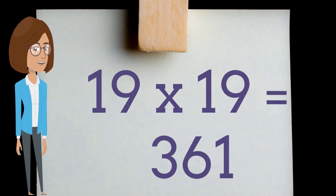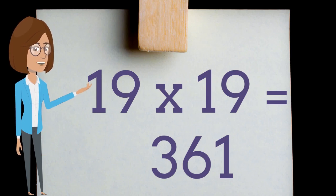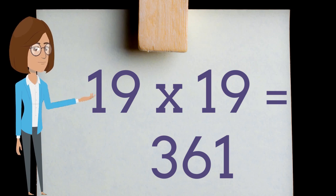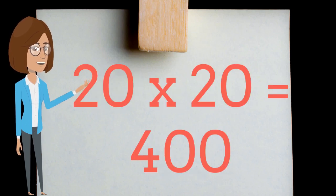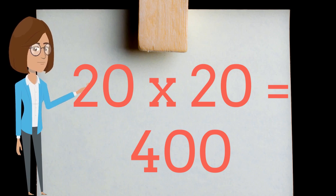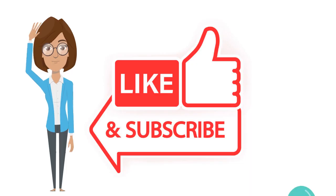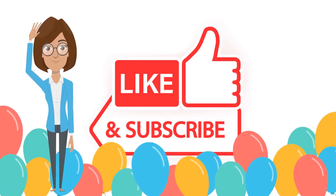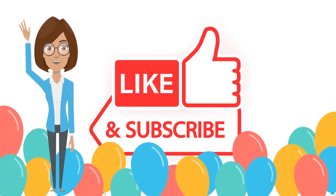Eighteen times eighteen is three hundred twenty-four. Nineteen times nineteen is three hundred sixty-one. Twenty times twenty is four hundred.